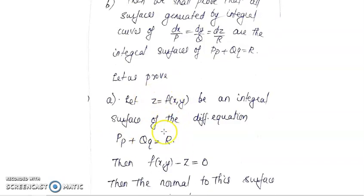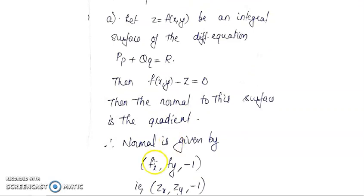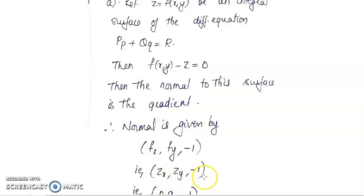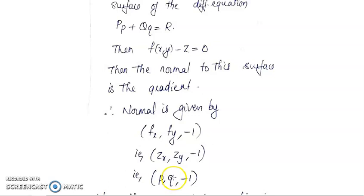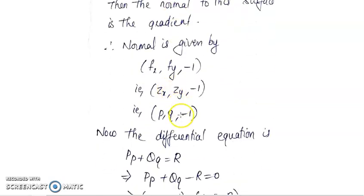I can write it as f(x,y) minus z equal to 0. If you take the gradient, the gradient will be the normal to this integral surface. The components of the gradient will be: first component is derivative with respect to x, second with respect to y, and third with respect to z. So the gradient or normal vector is given by fx, fy, and minus 1, which is zx, zy, minus 1, which I can denote as p, q, minus 1. So if z equal to f(x,y) is an integral surface, then (p, q, -1) is the corresponding normal vector.